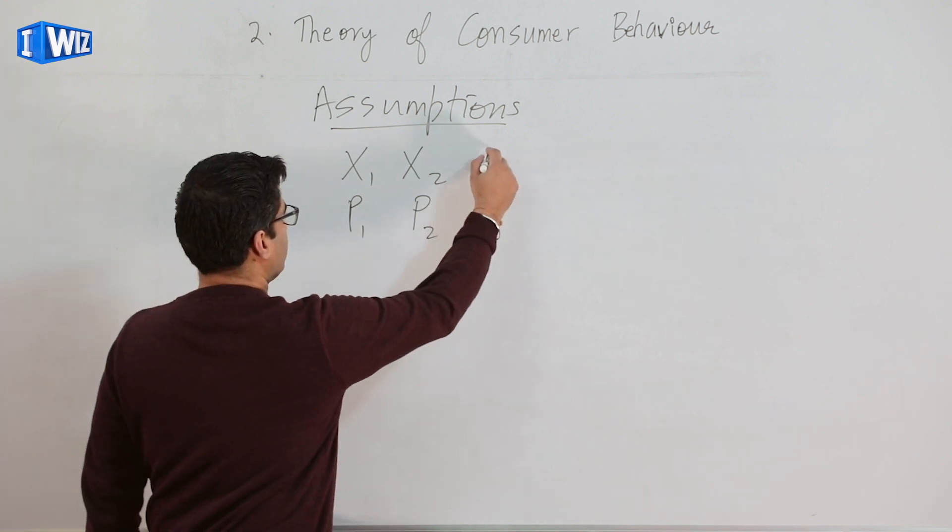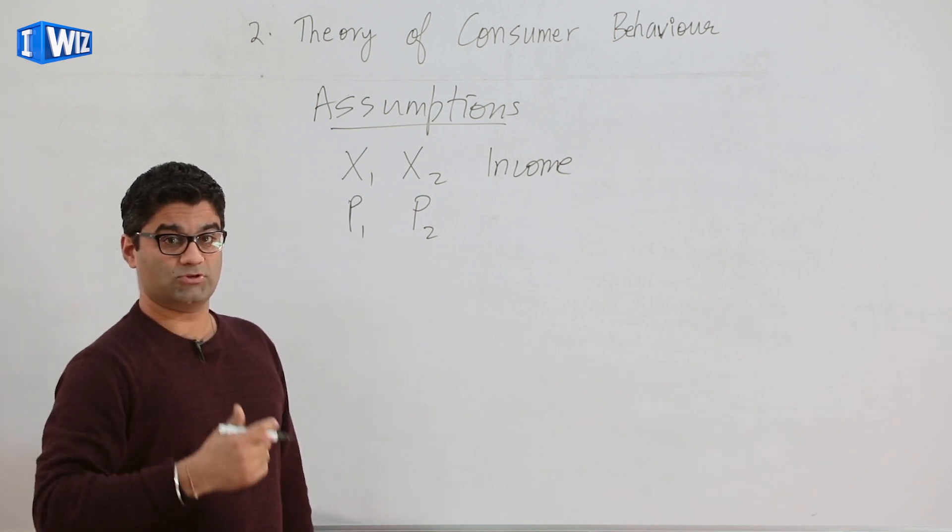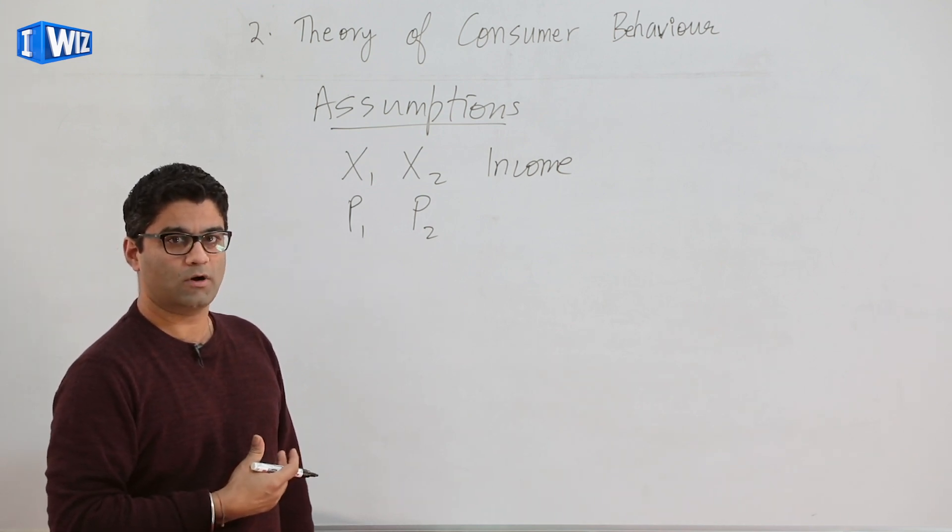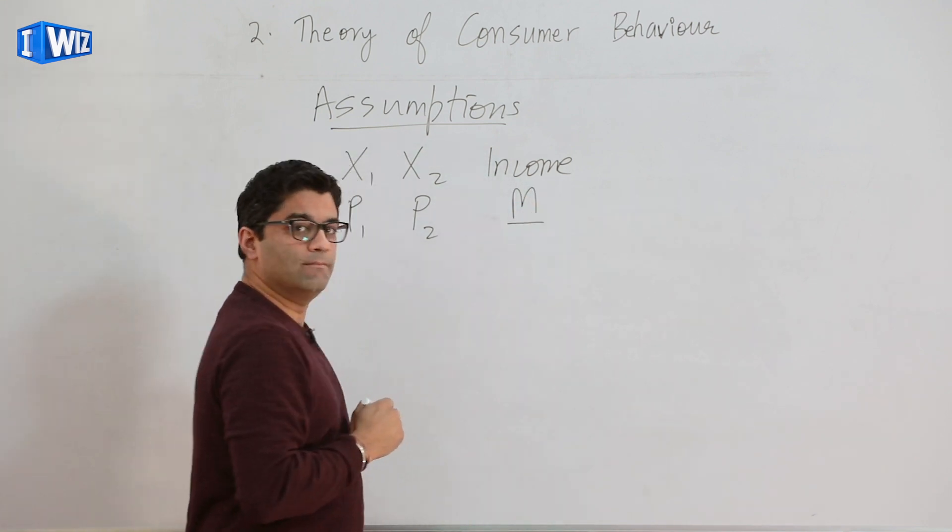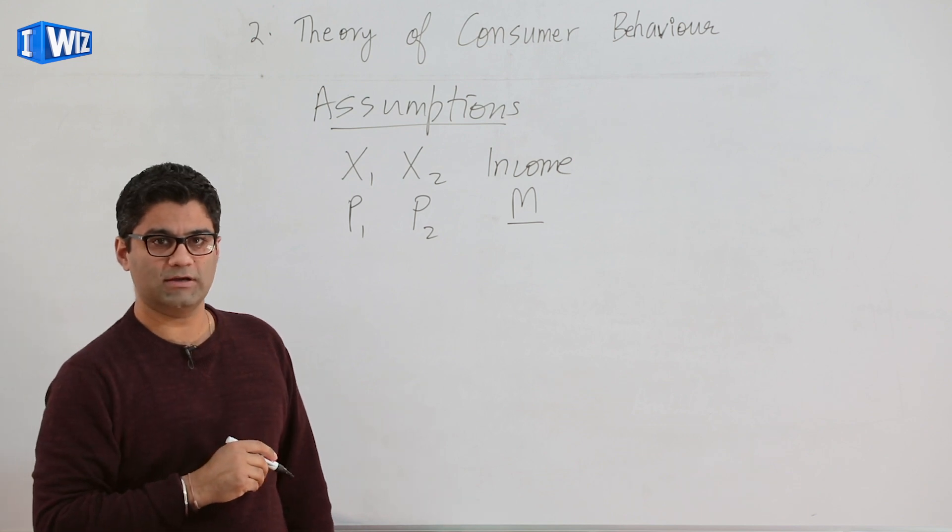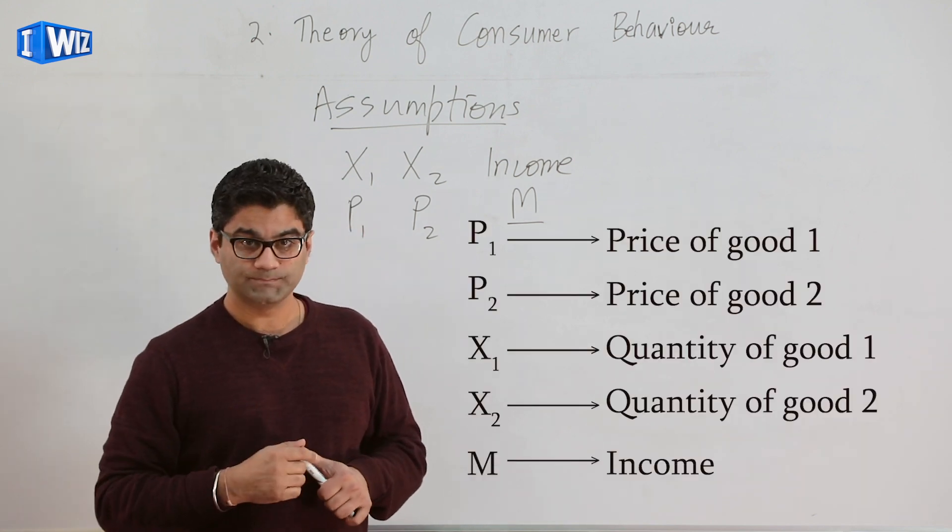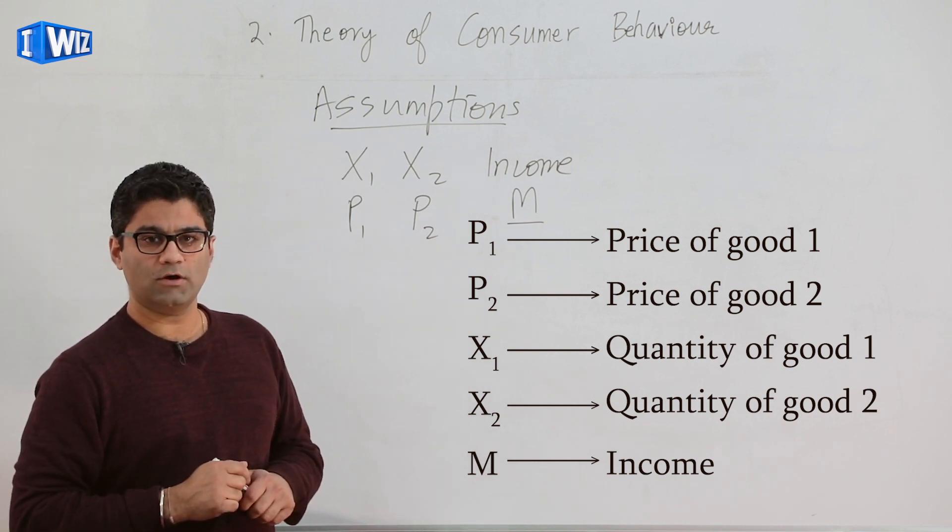That's right, income is a very important factor that will determine, like in your case it was your pocket money of 500 rupees, what combination of the two goods you will buy. So this is written as M. So M in this model is income. P₁, P₂, X₁, X₂, those are the five variables that we are going to be dealing with when we study the theory of consumer behavior.